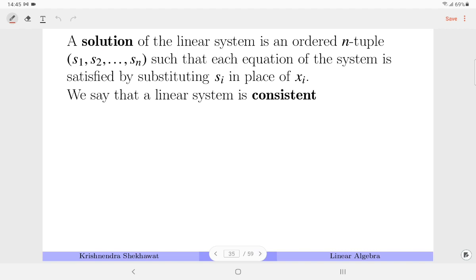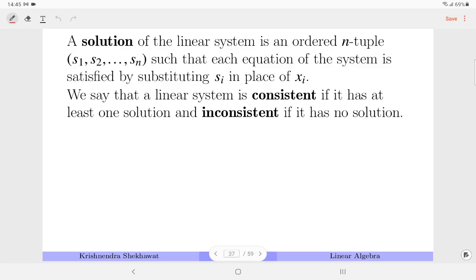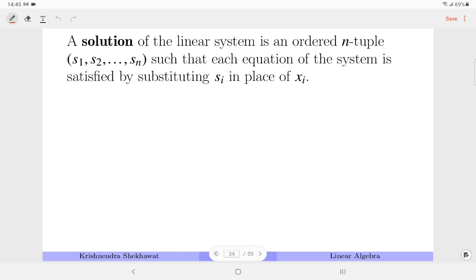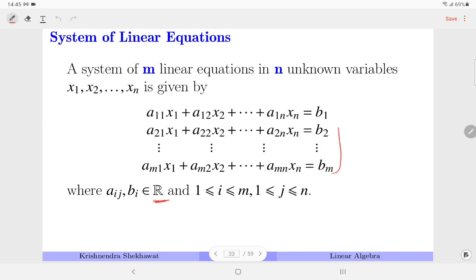We say a system is consistent if it has at least one solution, and otherwise we say it is inconsistent. So important terminology, please do remember it. Also, if all bi are 0, we call the system a homogeneous linear system. If b1 equals 0, b2 equals 0, and bm equals 0, then we call the system a homogeneous linear system.